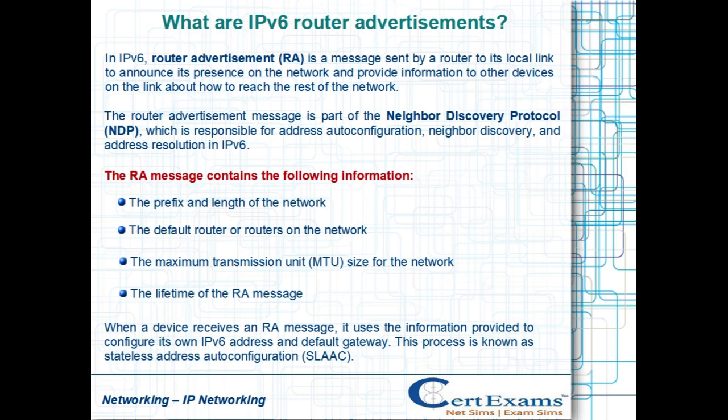When a device receives an RA message, it uses the information provided to configure its own IPv6 address and default gateway. This process is known as Stateless Address Autoconfiguration (SLAAC).